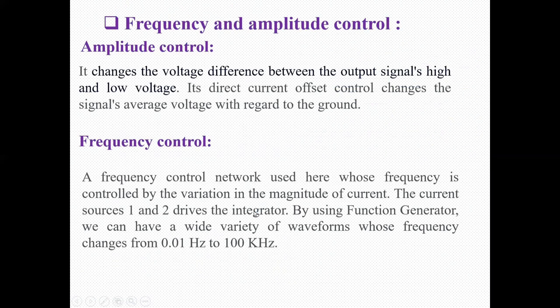Now, what is frequency and amplitude control? Amplitude control changes the voltage difference between the output signal's high and low voltage. It also controls changes to the signal's average voltage with regard to ground. The frequency control network controls frequency by variation in the magnitude of current. The constant current source drives the integrator, and by using this function generator, we can have a wide variety of waveforms whose frequency ranges from 0.1 Hz to 100 kHz.